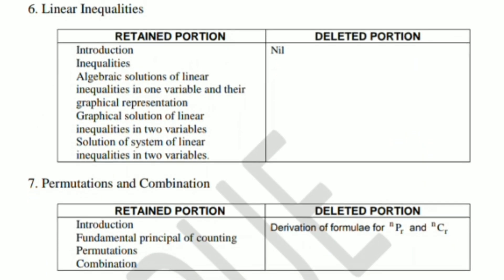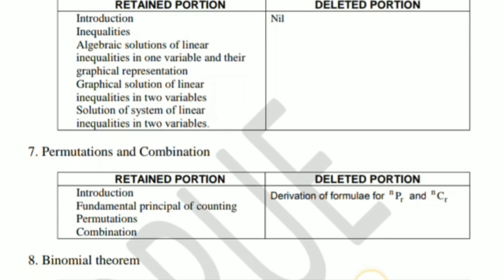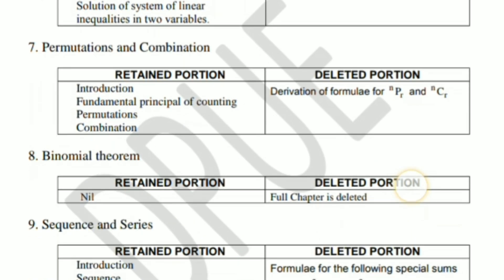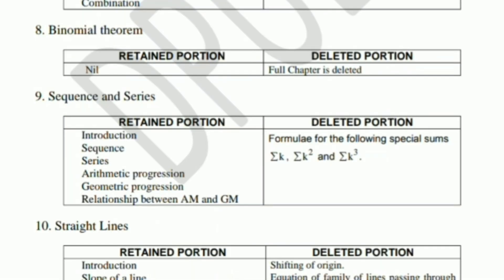Next, permutation and combination — there is a derivation formula for NPR and NCR. This is deleted in the binomial chapter as well. This chapter is deleted in total, as it is not related in the secondary syllabus. So this chapter is deleted in total.